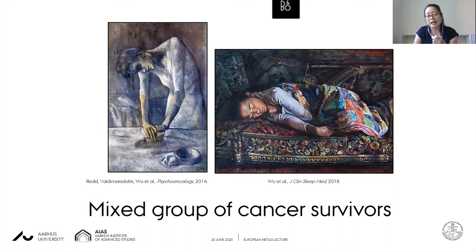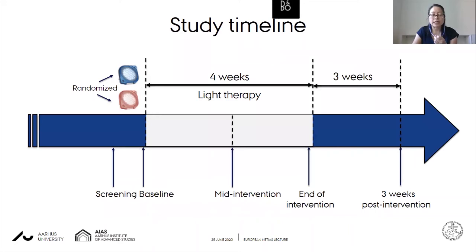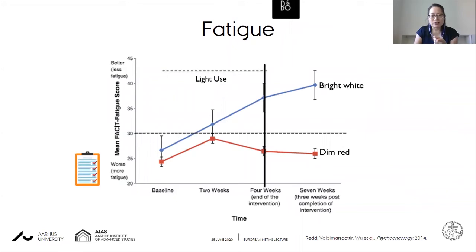This encouraged us at Mount Sinai — William Redd, Heiddis Valdimarsdottir, and I, among others — to test whether light therapy might help fatigue in cancer survivors who had completed their treatment, and also whether sleep might be improved. This was a randomized controlled trial in which patients were randomly assigned to either the bright white light or the dim red light box. After screening for fatigue, patients went home and used those boxes each morning for four weeks, with fatigue and sleep assessed at the midpoint, end, and three weeks later.